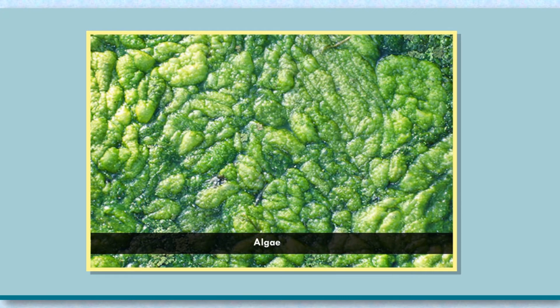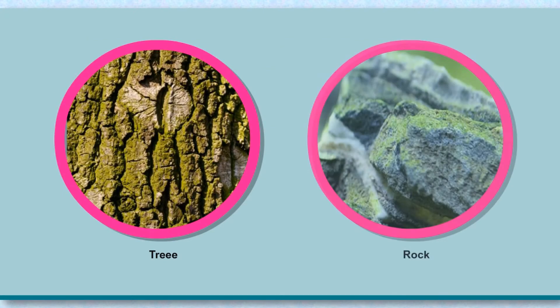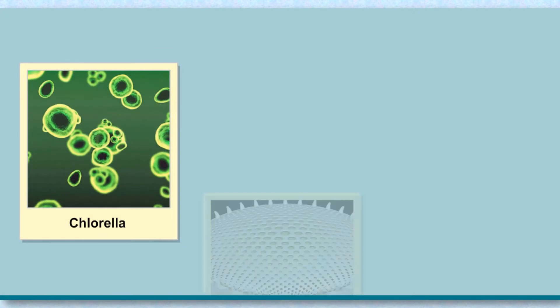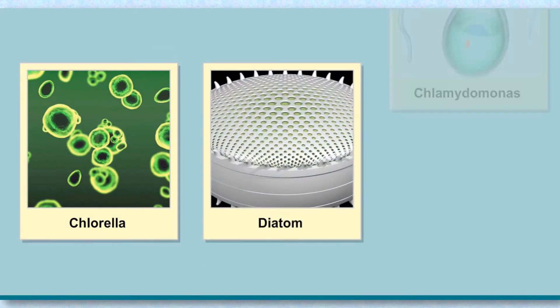Algae are groups of simple plants. Though they do not have any root and shoot system, they have chlorophyll and carry out photosynthesis. They may be unicellular or multicellular and usually grow well in moist places and water bodies such as ponds and lakes. They can also be seen on the bark of trees or on the surfaces of rocks.